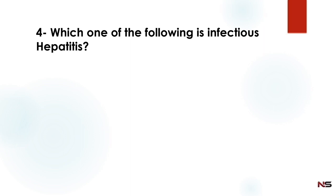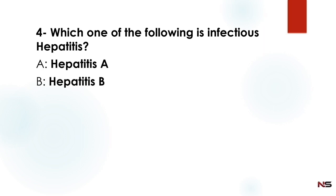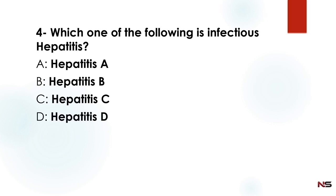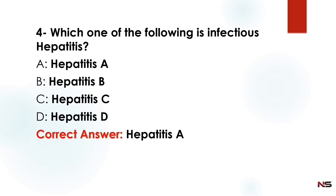Next question: Which one of the following is infectious hepatitis? Option A: Hepatitis A. Option B: Hepatitis B. Option C: Hepatitis C. Option D: Hepatitis D. The correct answer is Hepatitis A. Hepatitis A is infectious hepatitis.